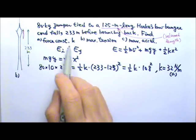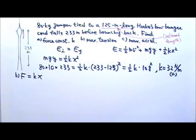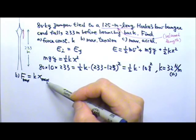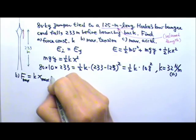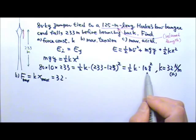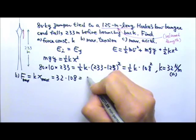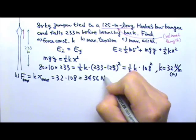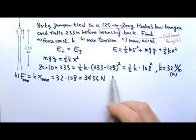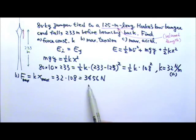For part B, we want the maximum tension in the bungee cord. Since F = kx, to find the maximum tension we need the maximum stretched amount, which happens when the person is at the lowest point. So the maximum tension is K × x = 32 × 108 = 3,456 N. That's equivalent to the weight of a 345 kg or 760 lb person, even though the jumper is only 80 kg.